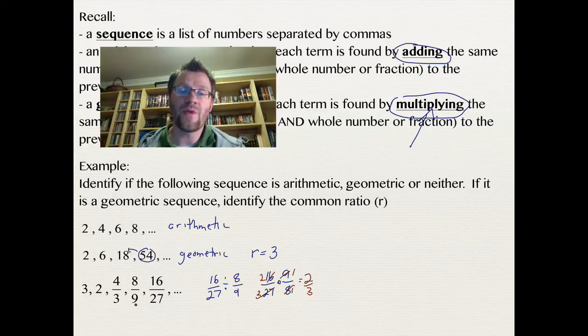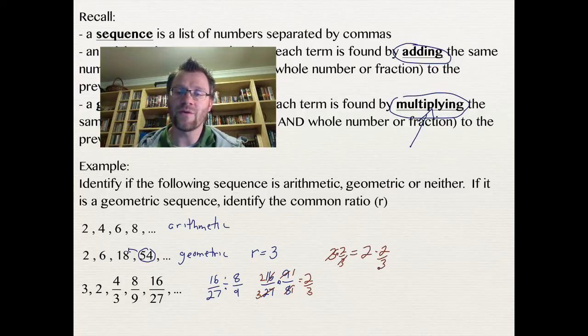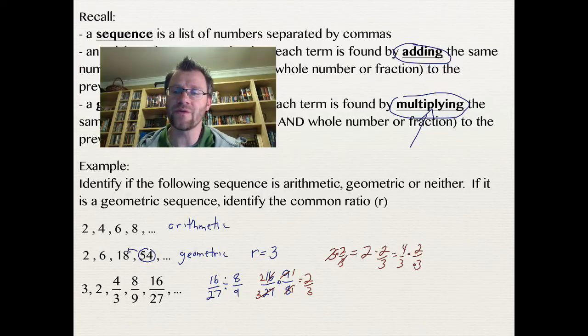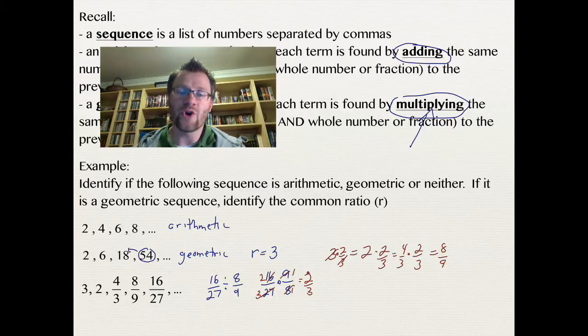We'll do the same thing with 8 ninths and 4 thirds. If we get 2 thirds again, then we can assume that that is our common ratio. Now, the other thing we could also do is just take 3, multiply it by 2 thirds, and we should get an answer of 2. And you can see that that's the case. We can take 2 and multiply it by 2 thirds. That gives us 4 thirds. That's our third term here. And if we take that and multiply it by 2 thirds, we get 8 ninths, which is our fourth term. So that means our common ratio in this case is 2 thirds.